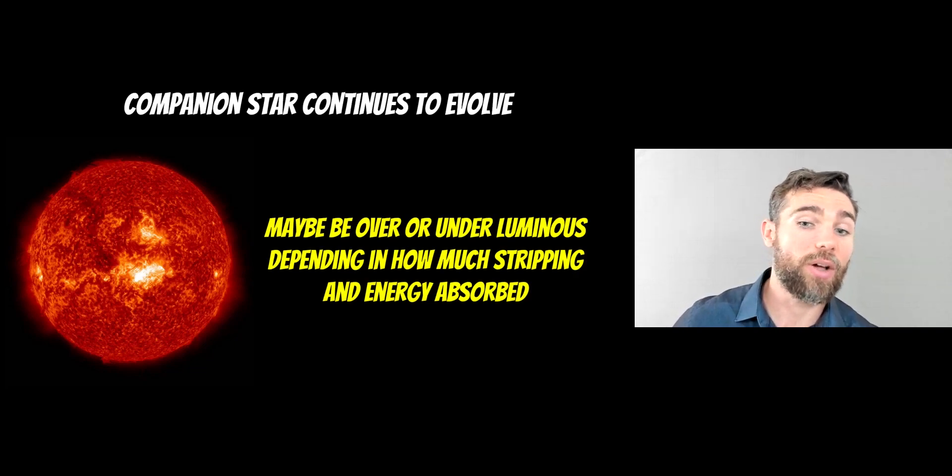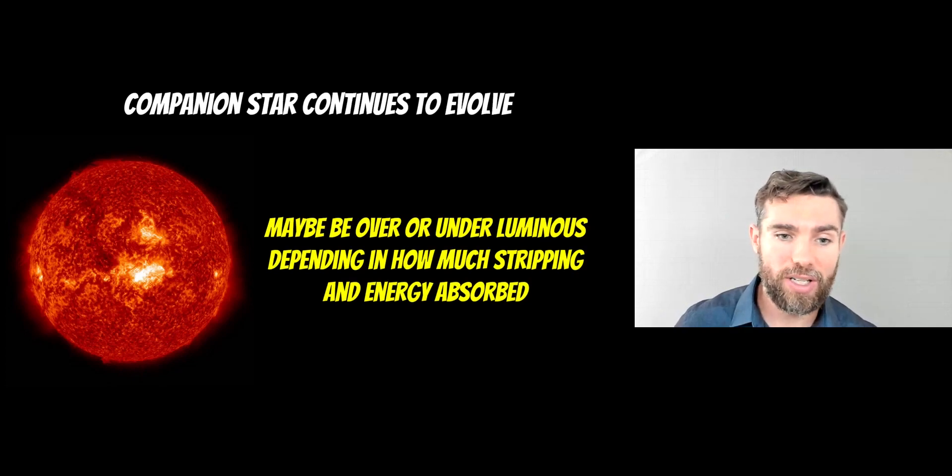Now it could be that it would be over-luminous or under-luminous for an equivalent star of the same age. That could be because it's absorbed more energy, it's had some layers stripped off, so it will change it slightly. This particular companion star, although it's going to evolve like a normal star, if it's had a lot of its outer layers stripped off then it's obviously going to be less luminous. It may have absorbed some of the energy which may make it more luminous. So it depends on the specifics of the actual system, but it would survive and it just slightly changes its characteristics afterwards depending on a few parameters. So that's the good news.